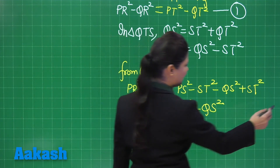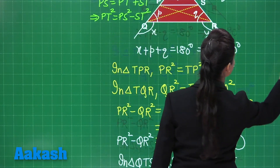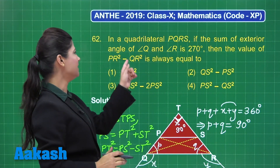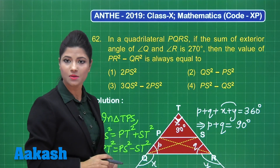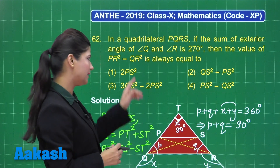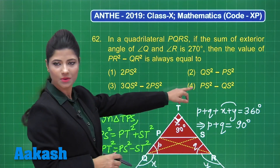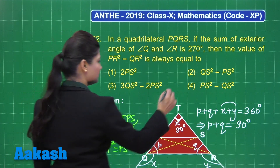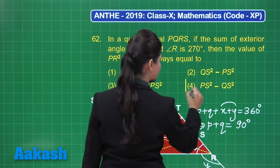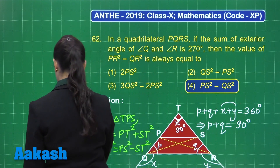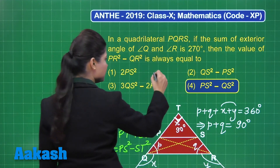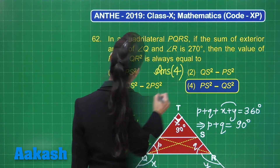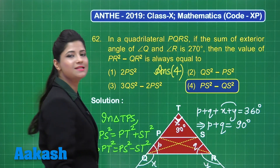We have obtained the required answer: PR squared minus QR squared is always equal to PS squared minus QS squared, which is present in option number 4. You can mark the required answer for this question as option 4. I hope this question is clear.